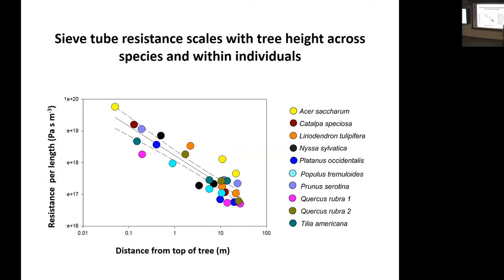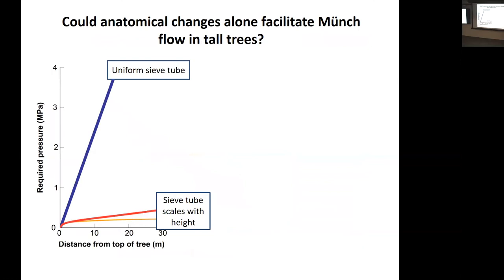The question this leaves is: is it enough? The morning glory had to do this and more — what are the trees doing additionally? We went back to modeling because some things can't always be measured. These basic models of the phloem show how we'd expect pressure to change with different anatomy. If there were no change in anatomy along the length of a tree, as you got taller you'd need really high pressure. But if you put in this scaling relationship — where resistance decreases as tubes and pores get bigger — the required pressure drops off, and you don't ever need those really high pressures.